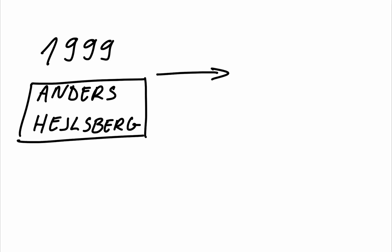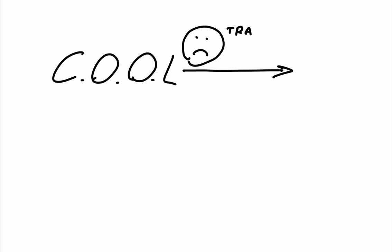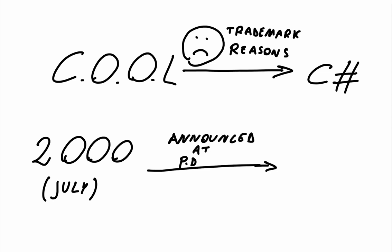He, together with his engineering team, developed COOL, or C-like object-oriented language. As the name suggests, its main strength is that this language uses object-oriented design. Although the development process ran flawlessly at first, the name needed to change because of trademark and copyright reasons, from COOL to C-sharp. In the next year, in July of 2000, the .NET project, alongside C-sharp, was publicly announced at the Professional Developers Conference.